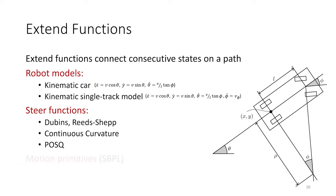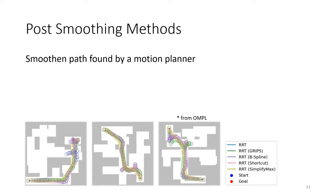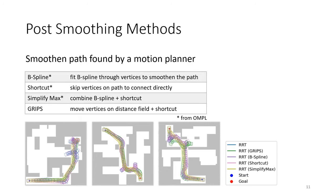Post-smoothing methods improve the path found by the motion planners. We provide interfaces to the following algorithms from OMPL. B-spline, which fits a spline through the vertices to smoothen the path. Shortcut tries to skip vertices on the path to connect them directly. Simplify Max combines B-spline and shortcutting. Finally, gradient-informed path smoothing, or GRIPS, moves vertices on the obstacle distance field gradient and uses shortcutting to smoothen the path.